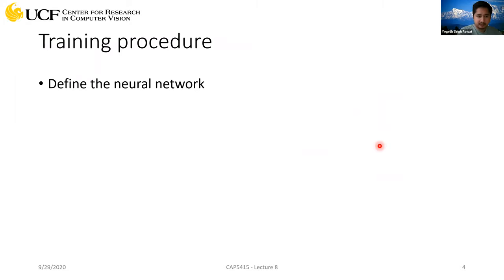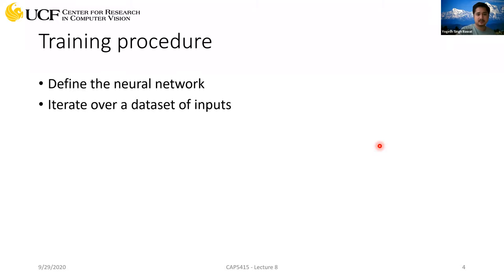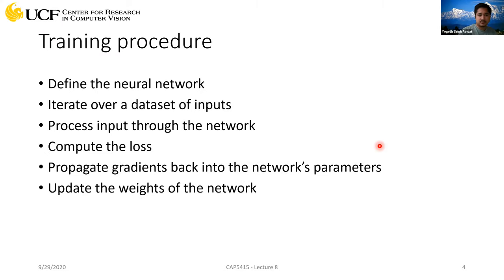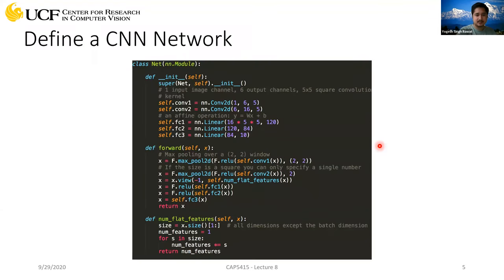Then we were looking into the training procedure and how to define a neural network. We saw that if you have to design a CNN with a couple of layers and finally a fully connected layer, how we can define each and every layer in that network. We also looked into how we can process our data so that we can feed it to our network for training. We are going to cover the rest of that today.